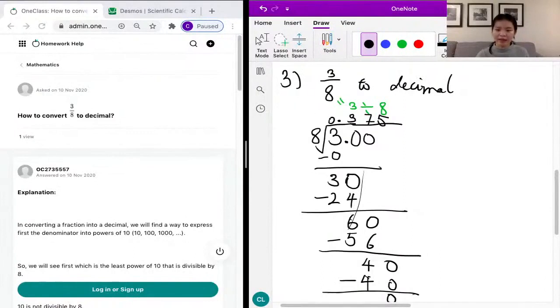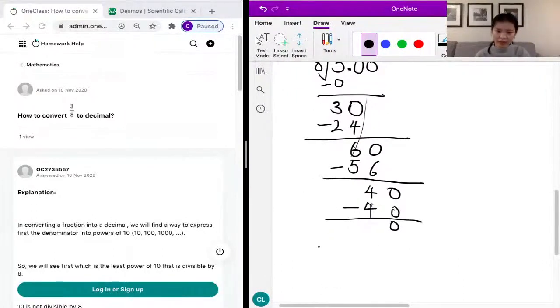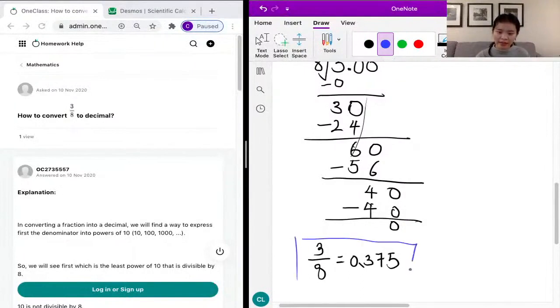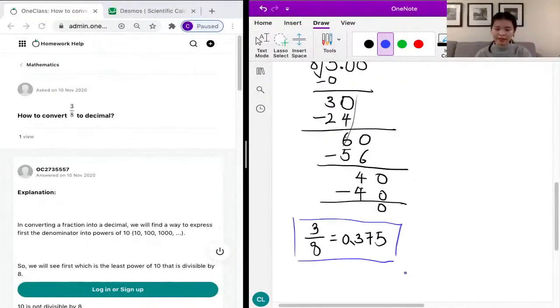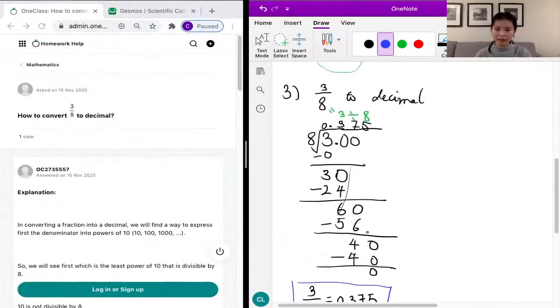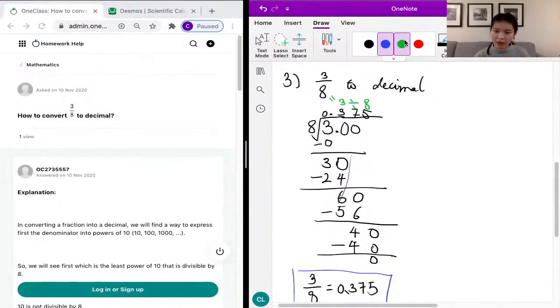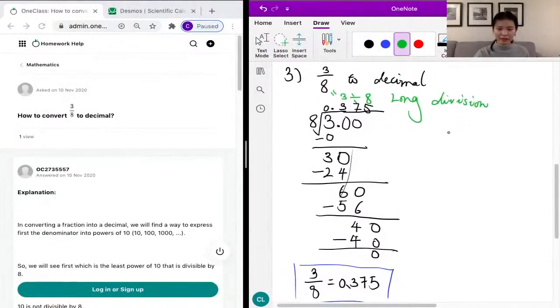We have our answer, which is a decimal, and it's 0.375. So over here we know that 3 over 8 is equal to 0.375 as a decimal, and this is our answer. This is how we convert a fraction to a decimal. We just use long division. Very straightforward, isn't it? Let's look at the sample solution over here.